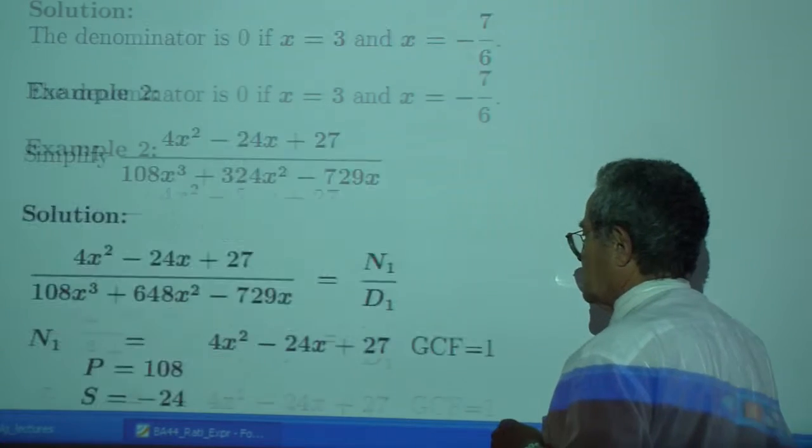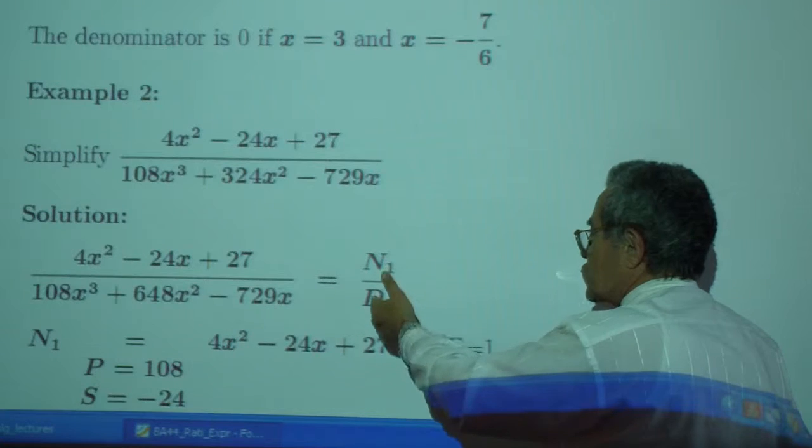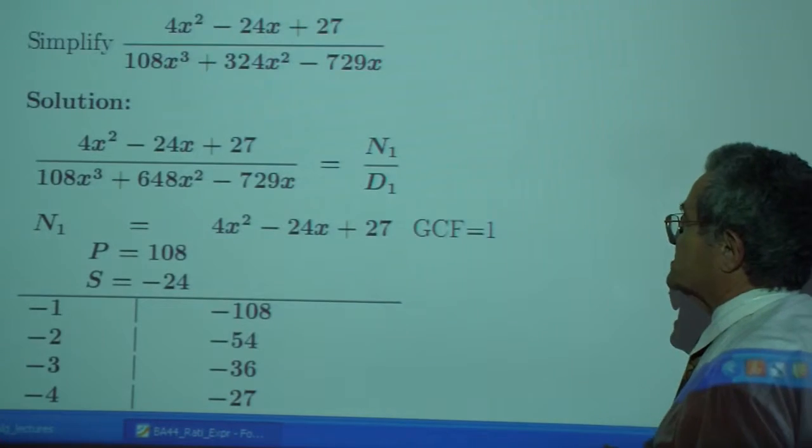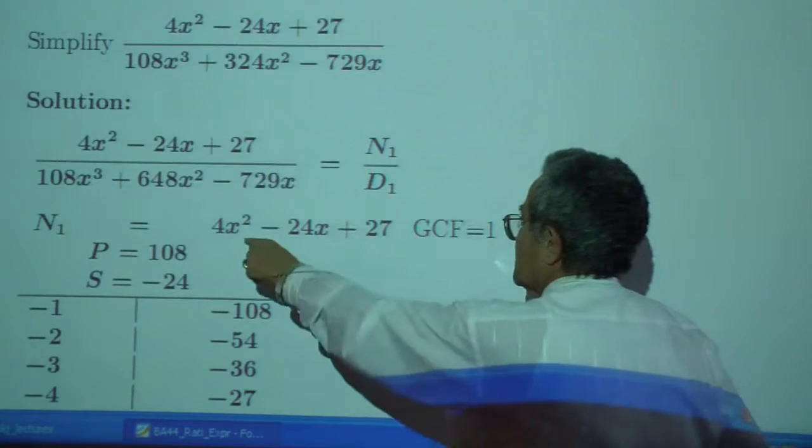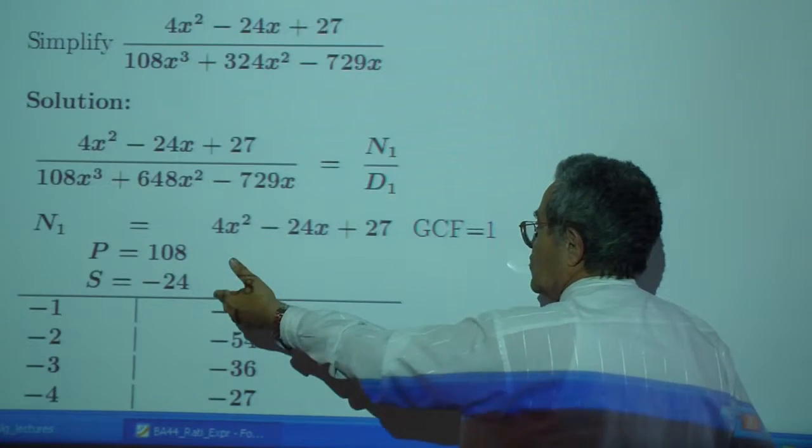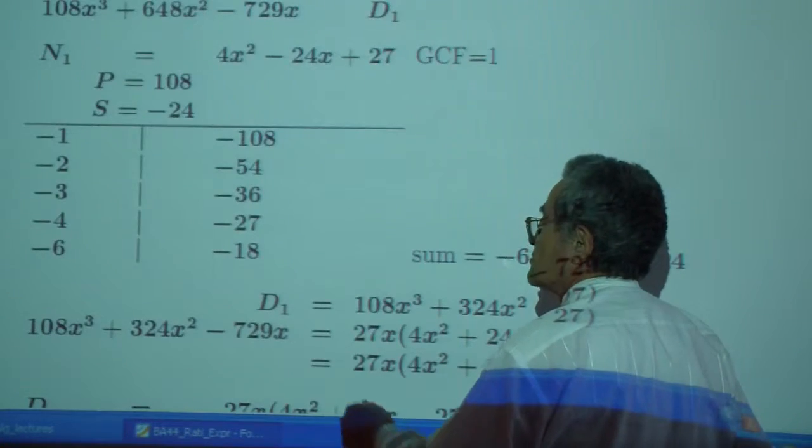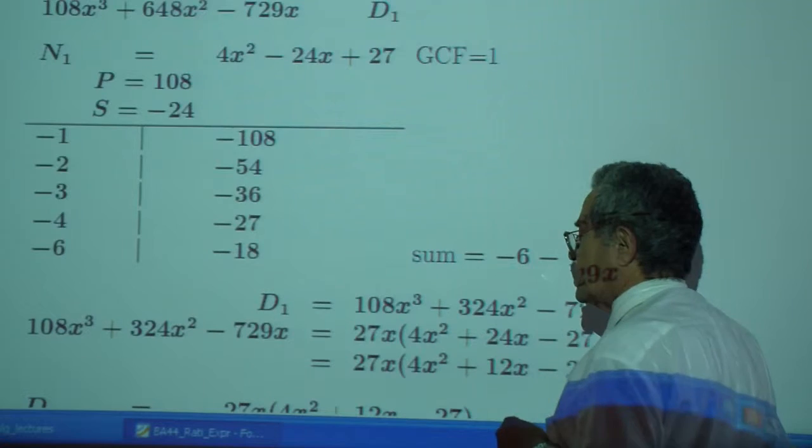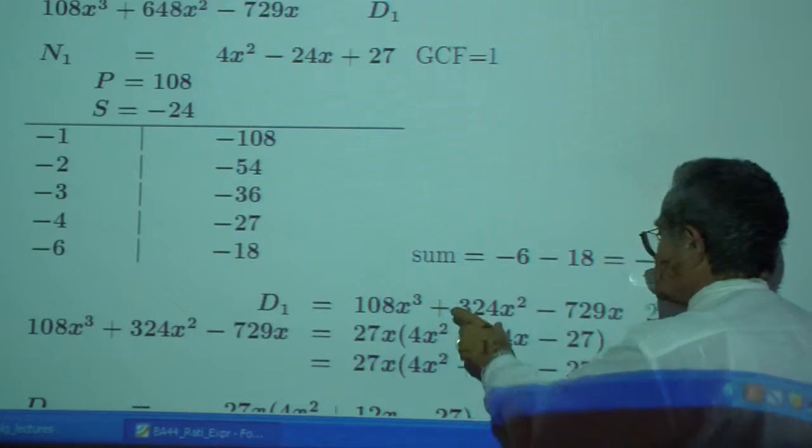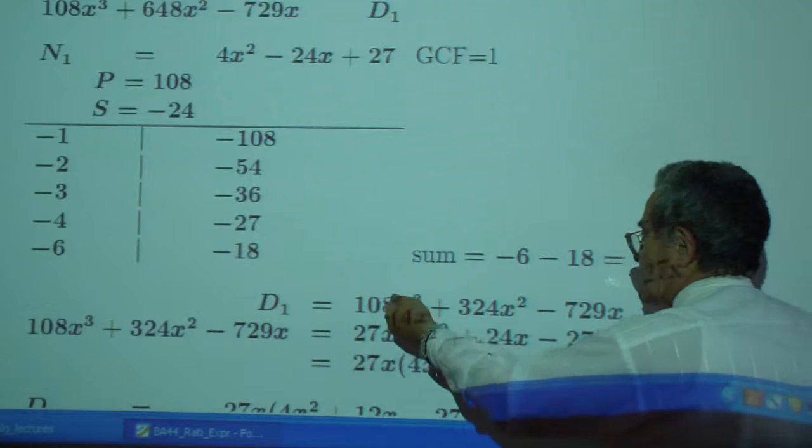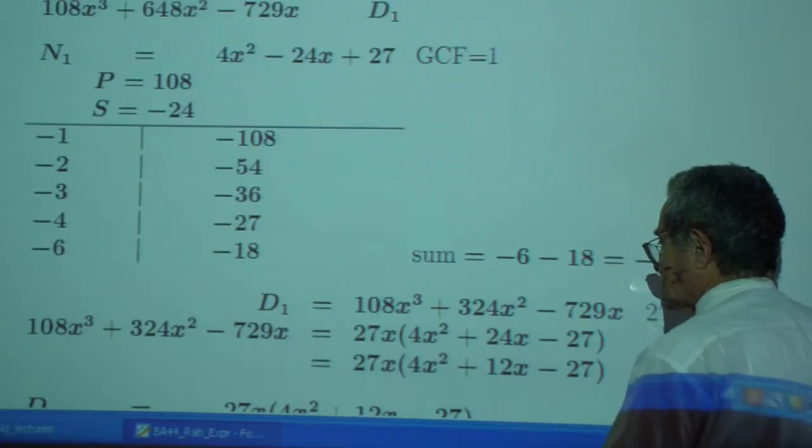Simplify the following. With the numerator by itself, the denominator by itself, the numerator is right here. Do a product sum like I showed you. The magic numbers are negative 6, negative 18. You know how to split up the middle term after you factor out the greatest common factor.